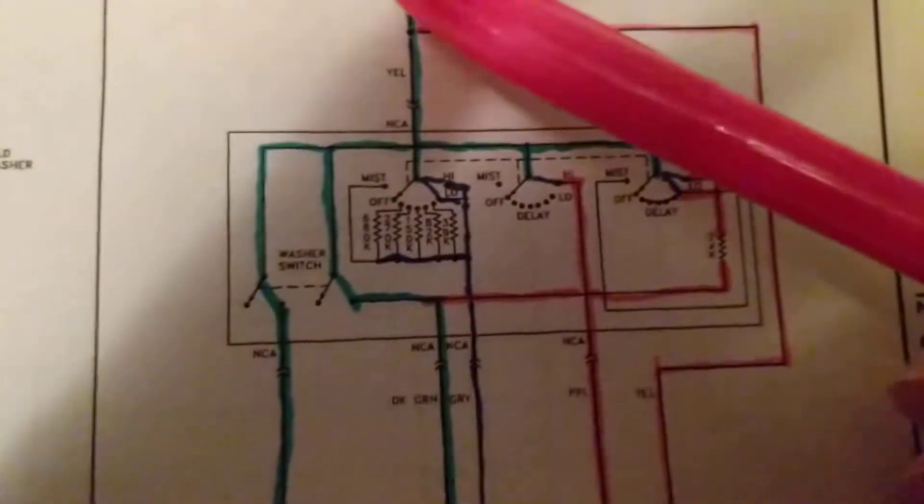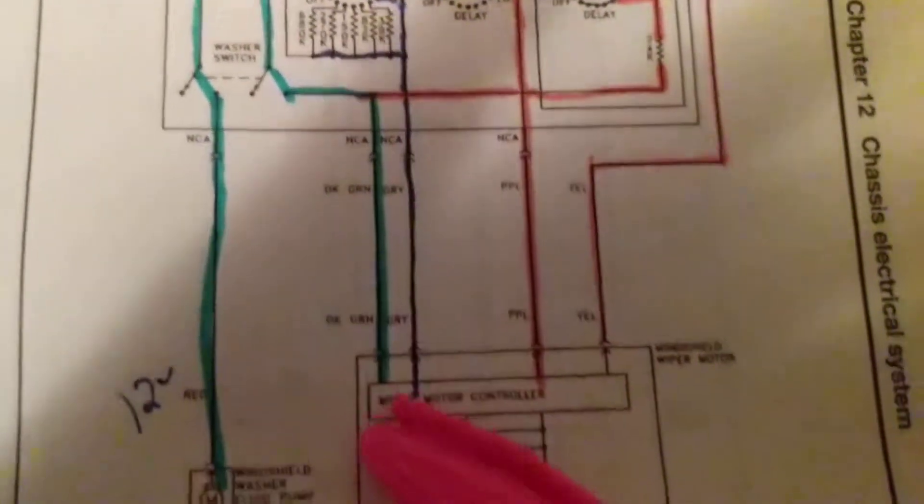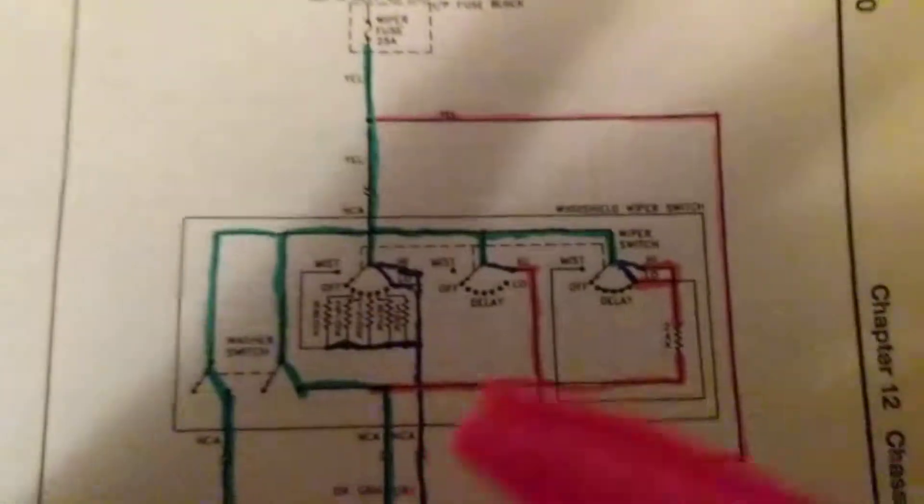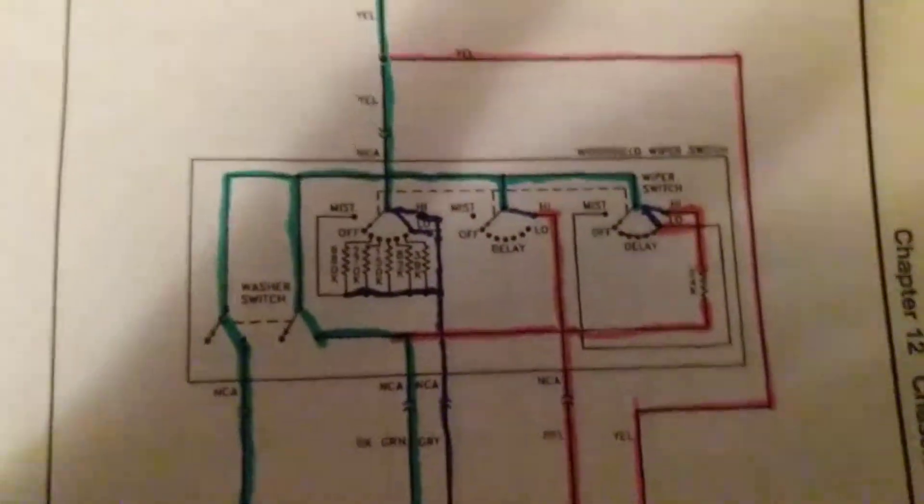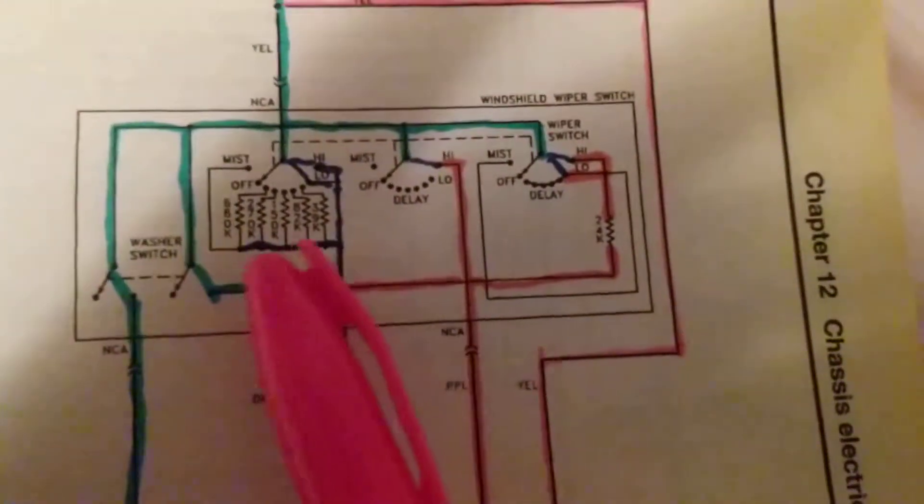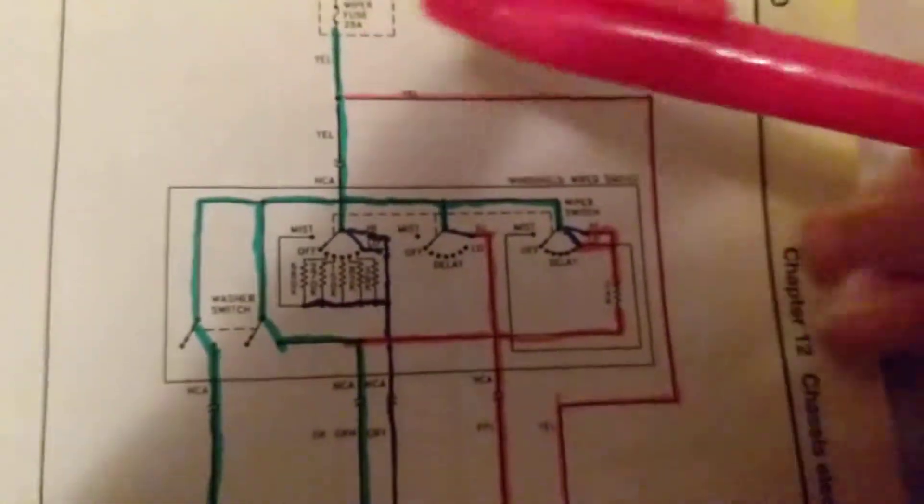To spray washer fluid on the window by the pump. And the other branch or the other circuit goes to a wiper motor controller. Now let's say we want to control the speed, as many times we do. We want to put it on low or high for the wipers. How does it happen? Let's see the circuit.